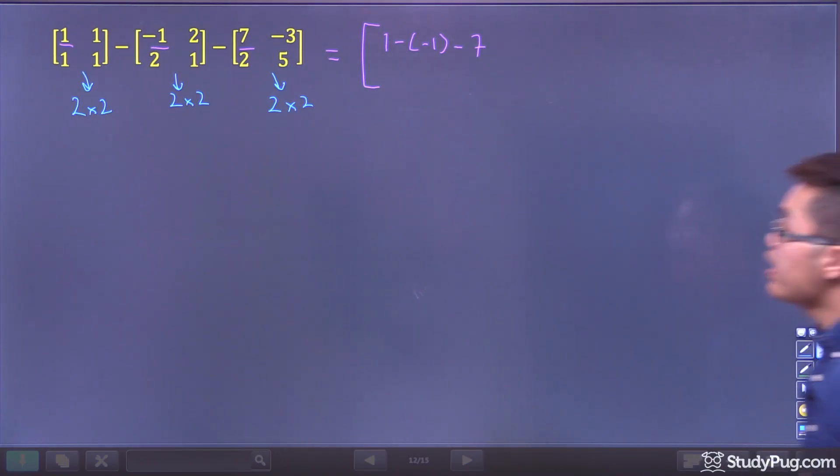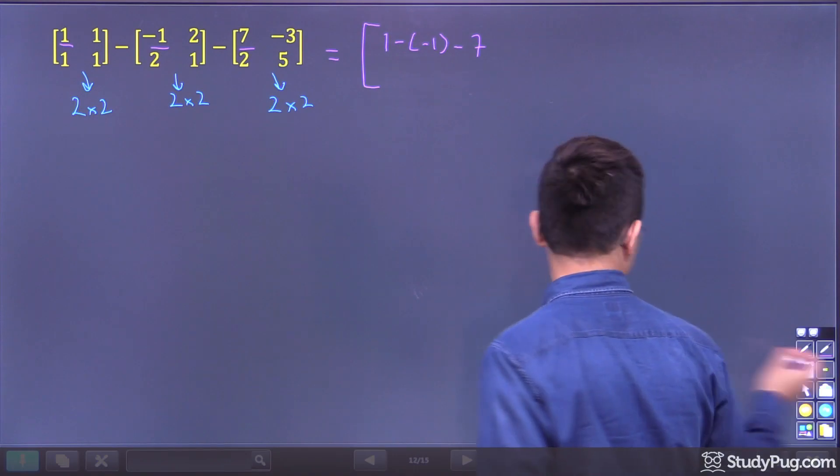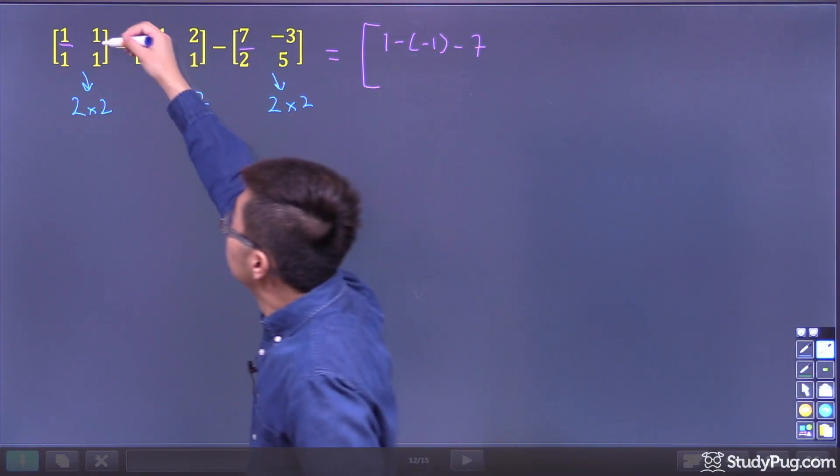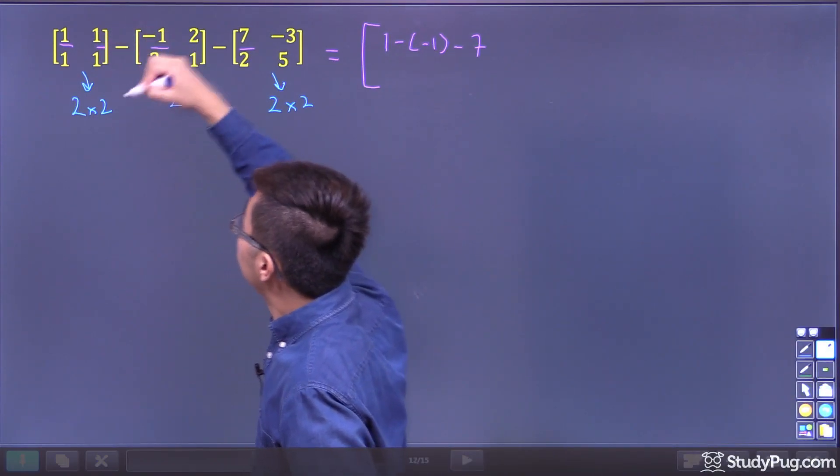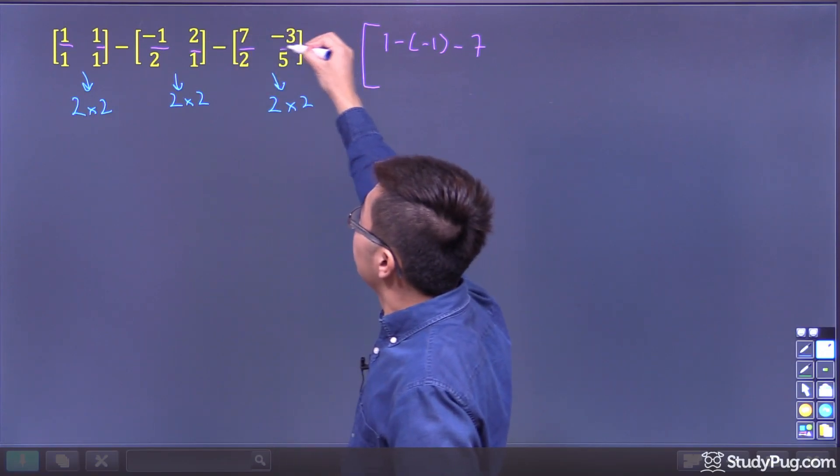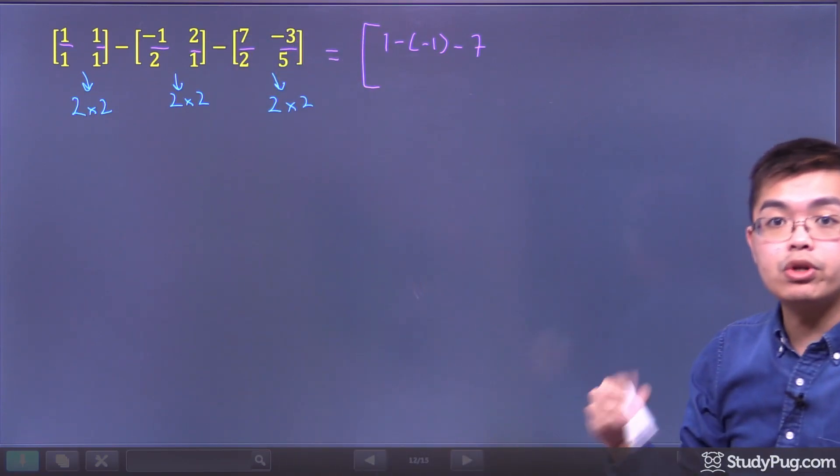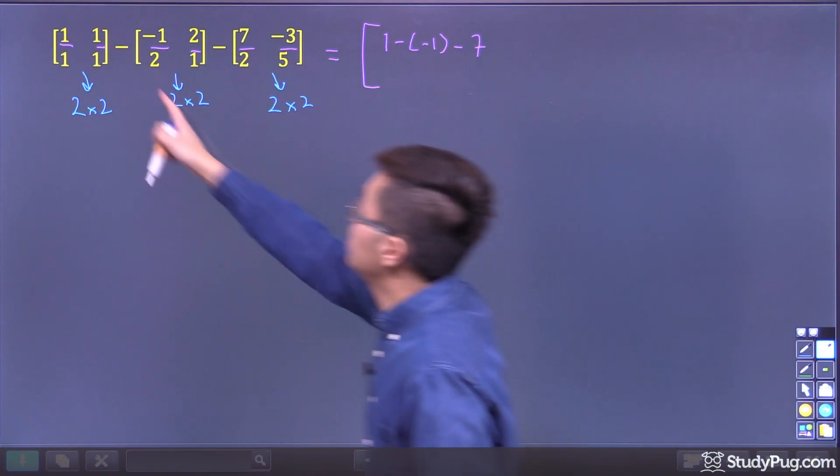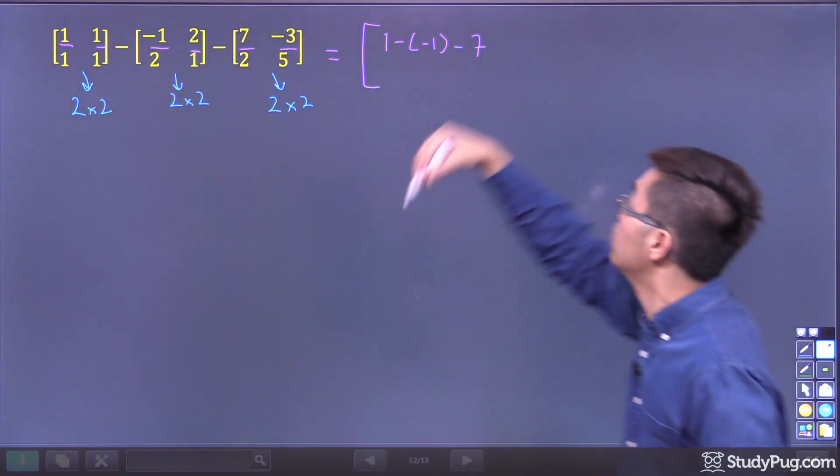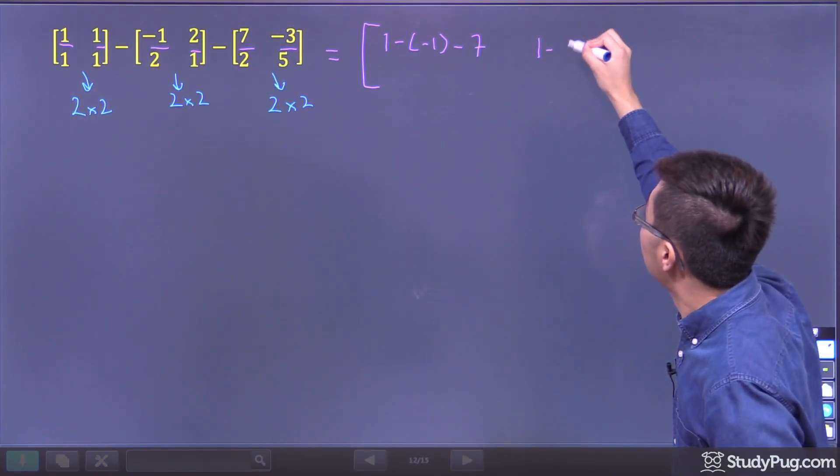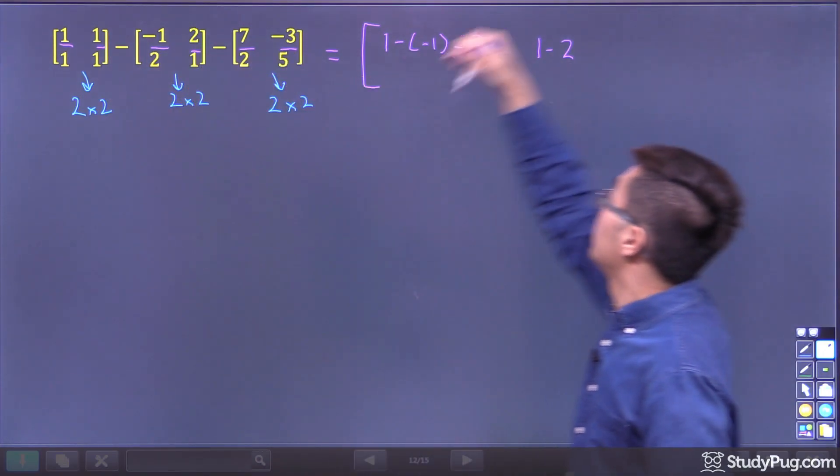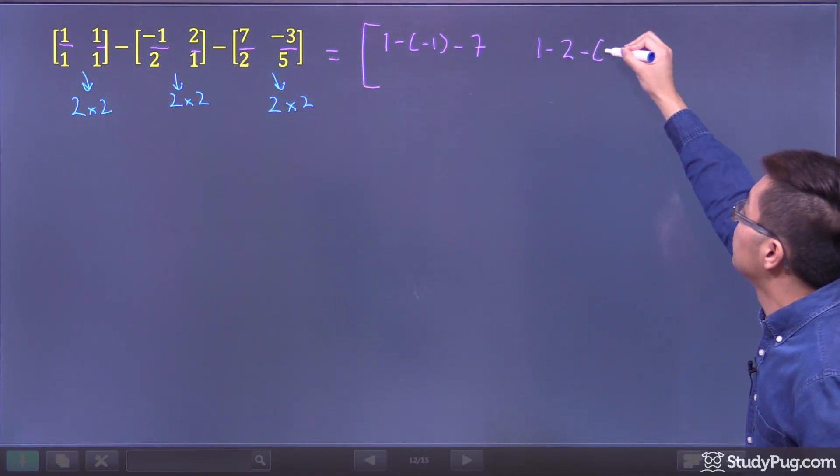And then for the second entry, the second entry is right here. We got 1, 2, and negative 3. So 1, 2, and negative 3 are the corresponding entries. So here we're going to do 1 minus 2, 1 minus 2 minus negative 3. So minus negative 3.